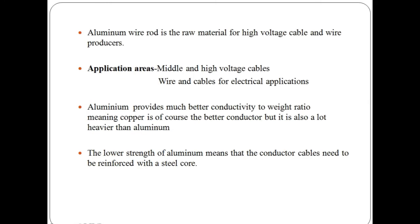Aluminum conductor cables are used for overhead high voltage cables. The lower strength of aluminum is that the conductor cable need to be reinforced with a steel core. Copper and aluminum can be separated from one another magnetically when scrapped. Copper is widely used metal but is heavier than aluminum.